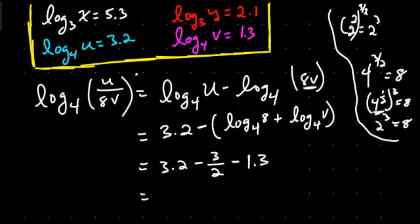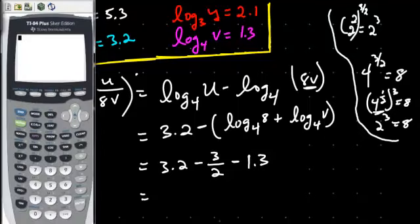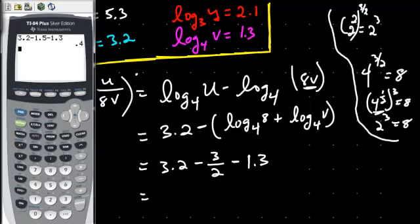Alright, and that's going to equal — let me work this out — 3.2 minus 1.5 minus 1.3. That's 0.4. So 3.2 minus 3 halves, which is 1.5, minus 1.3, is 0.4.